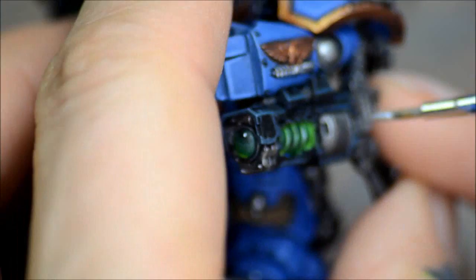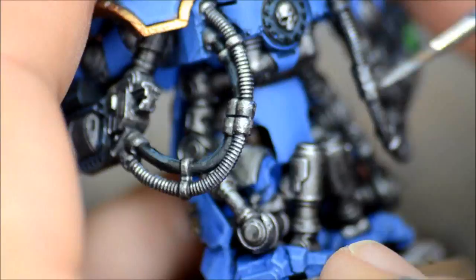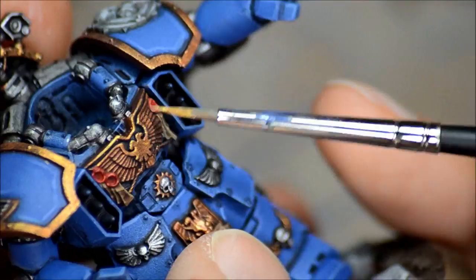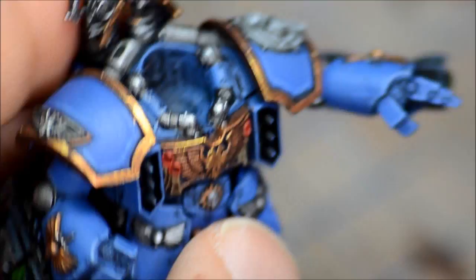Runefang Steel again for some final silver highlights here. Just trying to get the main areas that would be the most obvious just to help bring those out just a touch. You don't really notice the difference with the highest highlights, but it does help a touch. Same with the golds using this bright gold. This one isn't very opaque, so it's hard to tell. Just trying to get some edge highlights of things. These last highlights go very fast, just getting a little bit of impressions here and there.